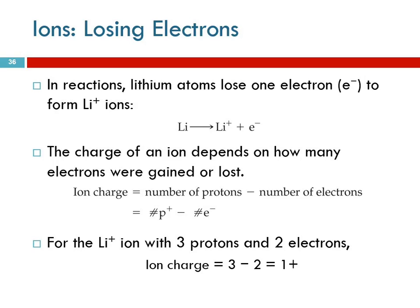The charge depends on how many electrons were gained or lost. The ion charge is going to be the number of protons, those are the positive charges, minus the number of electrons which is the negative charges. So for lithium plus ion it has three protons, two electrons, so three minus two is a one plus charge.